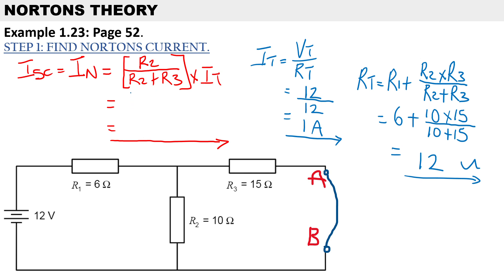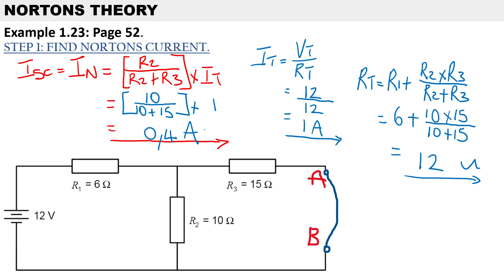Substituting the values in: R2 is 10 ohms over (R2 = 10 ohms plus R3 = 15 ohms), multiplied by the total current of 1 amp. Therefore the short-circuit current, which is Norton's current, is 0.4 amps.